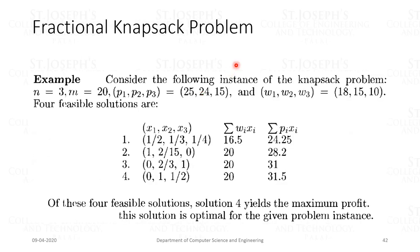There are two variations of the knapsack problem: the 0/1 knapsack problem, where each item is either taken or left behind, and the fractional knapsack problem, where we can select fractions of items to fill the knapsack. Here we are dealing with the fractional knapsack problem.